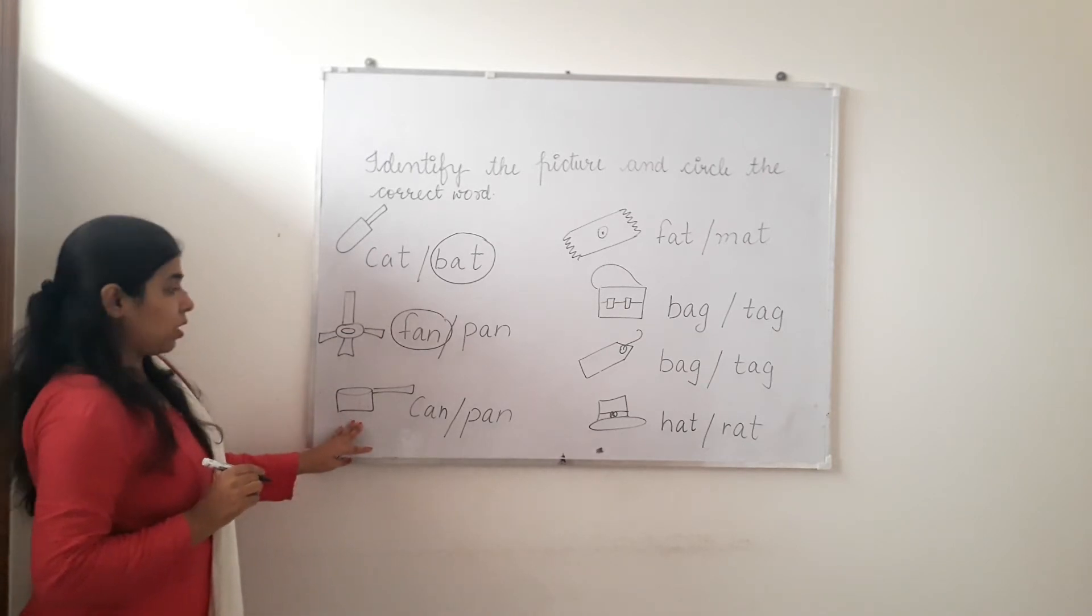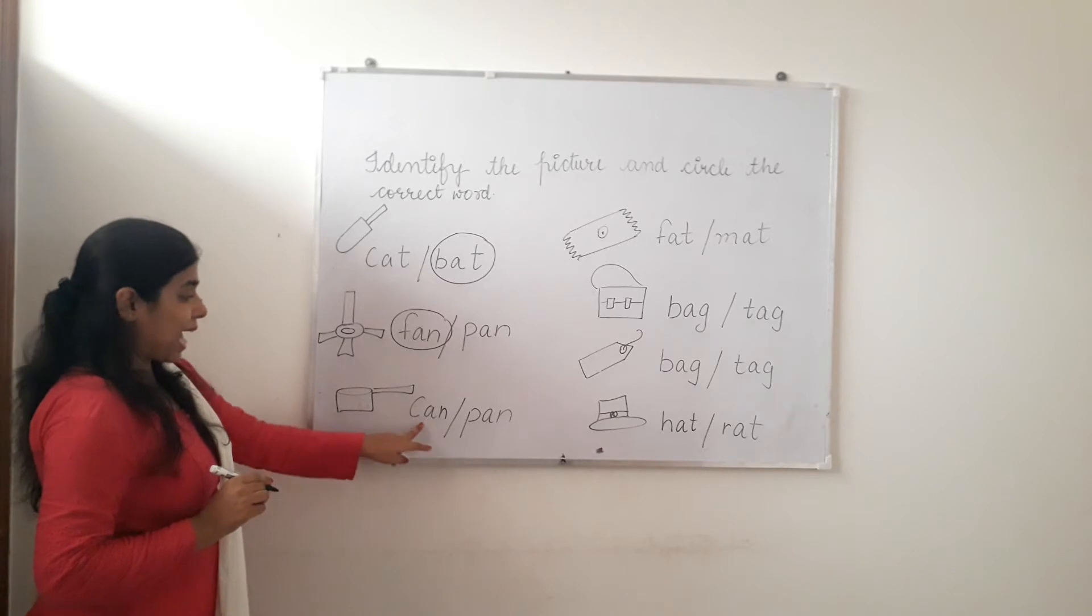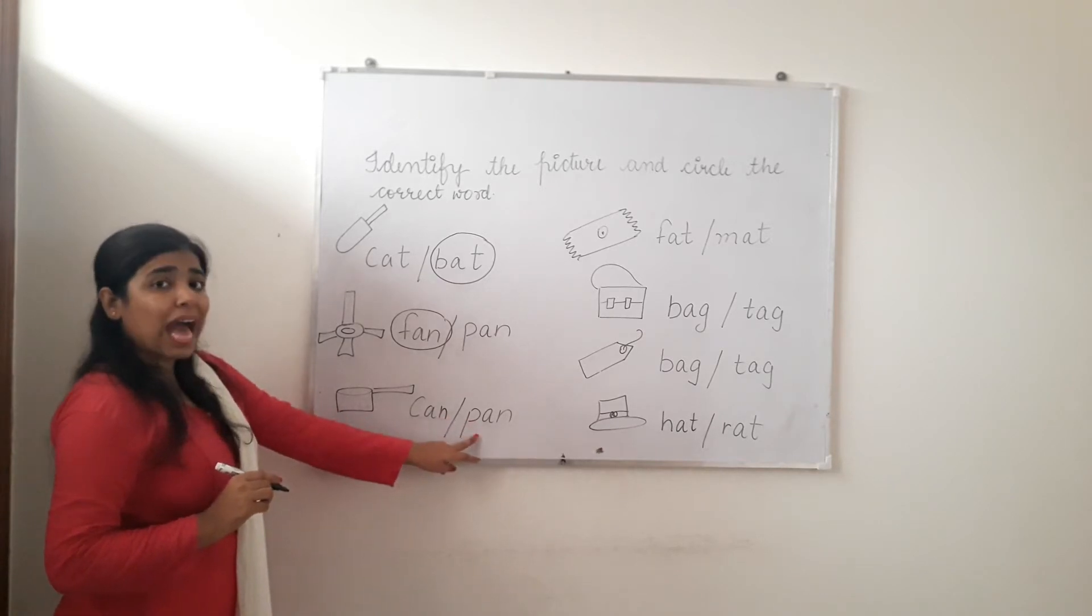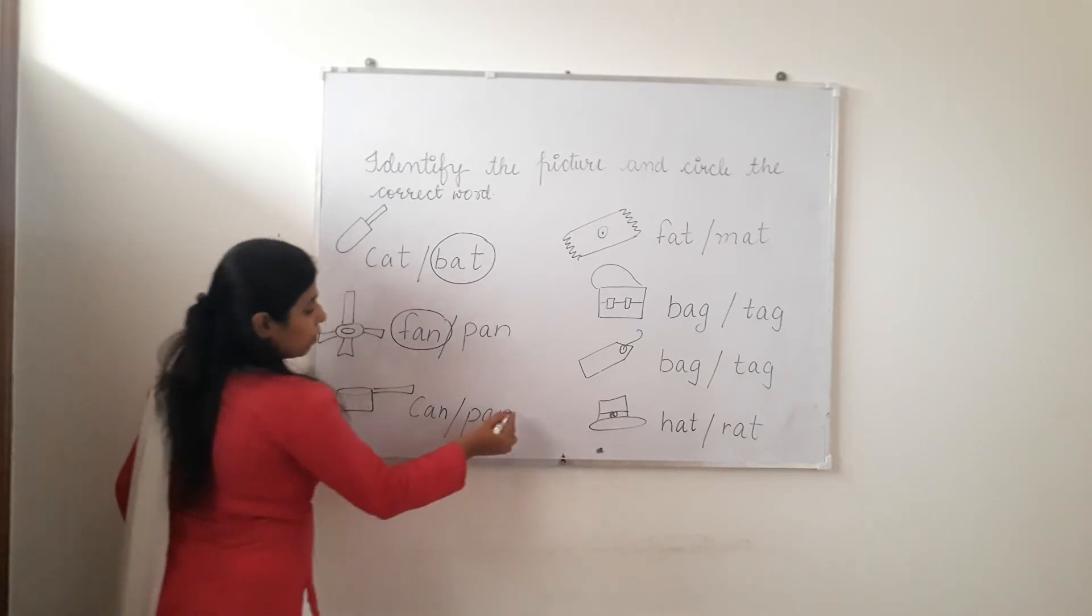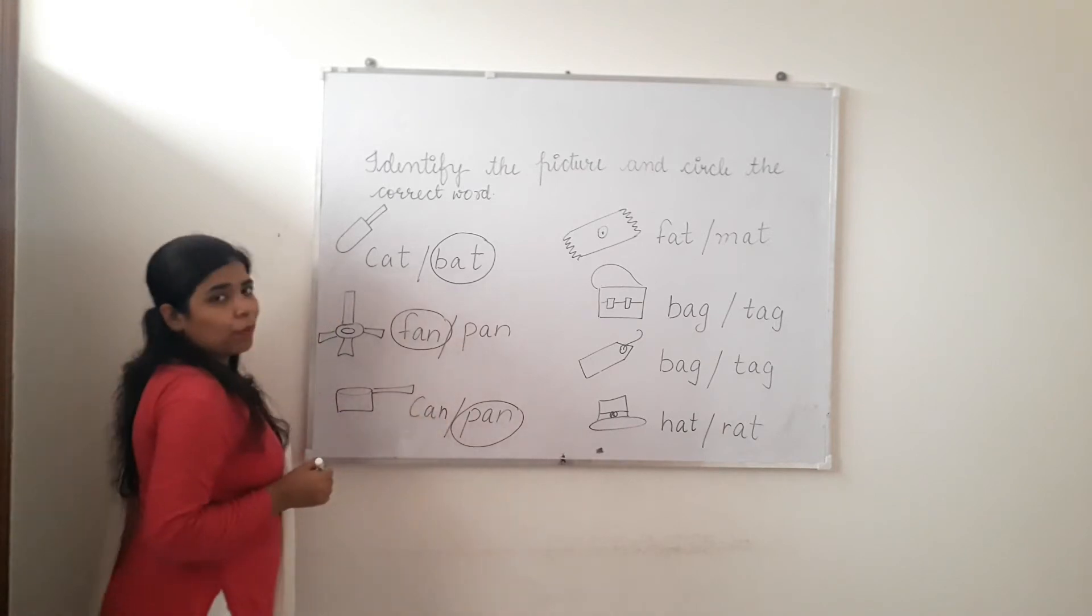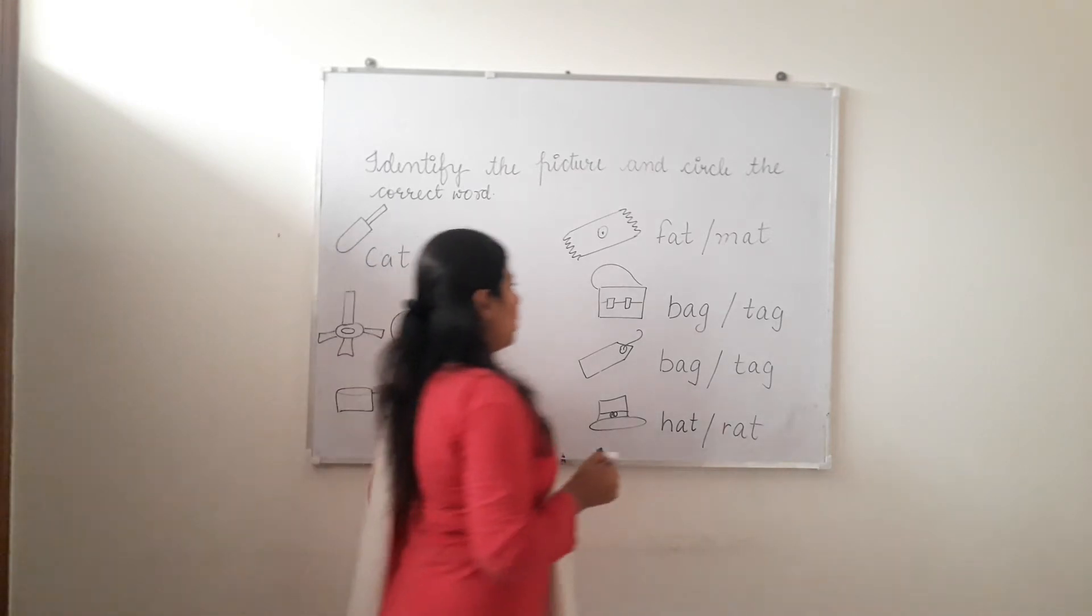Now next, what is this? Tell me, can, pan. Can, pan. What is this? Pan. So we will circle P-A-N, pan.